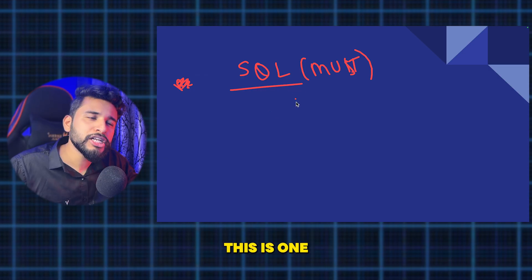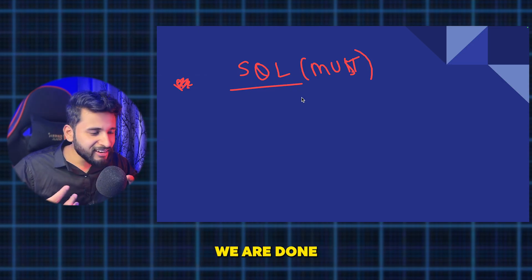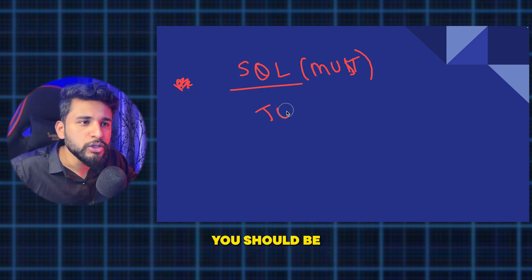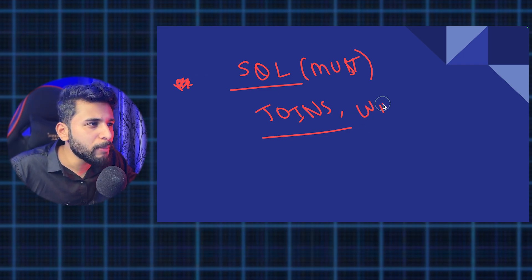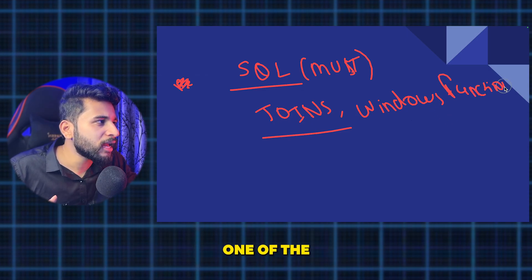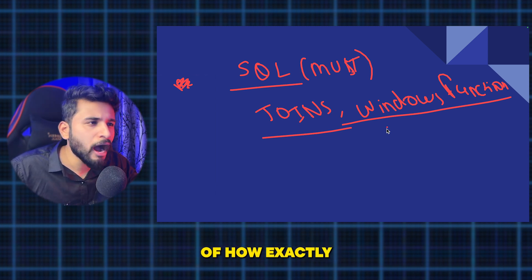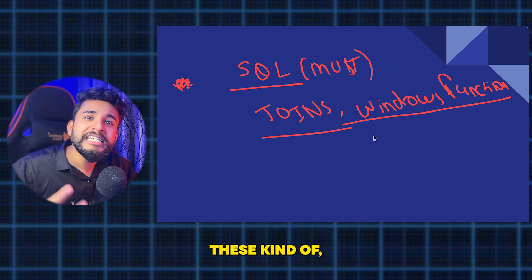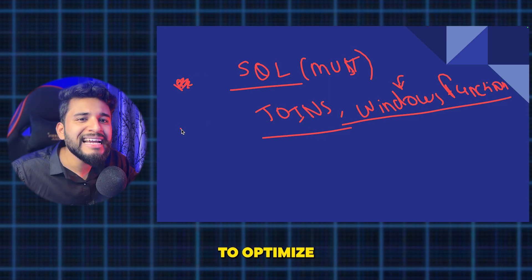SQL is very important and very underestimated — people think they are done with SQL, but there is so much more to it. You need to be aware and confident about joins. Window functions are a very famous topic for data domain interviews: ranks, lead, lag, first value, last value — these functions are very important and help you optimize your queries.